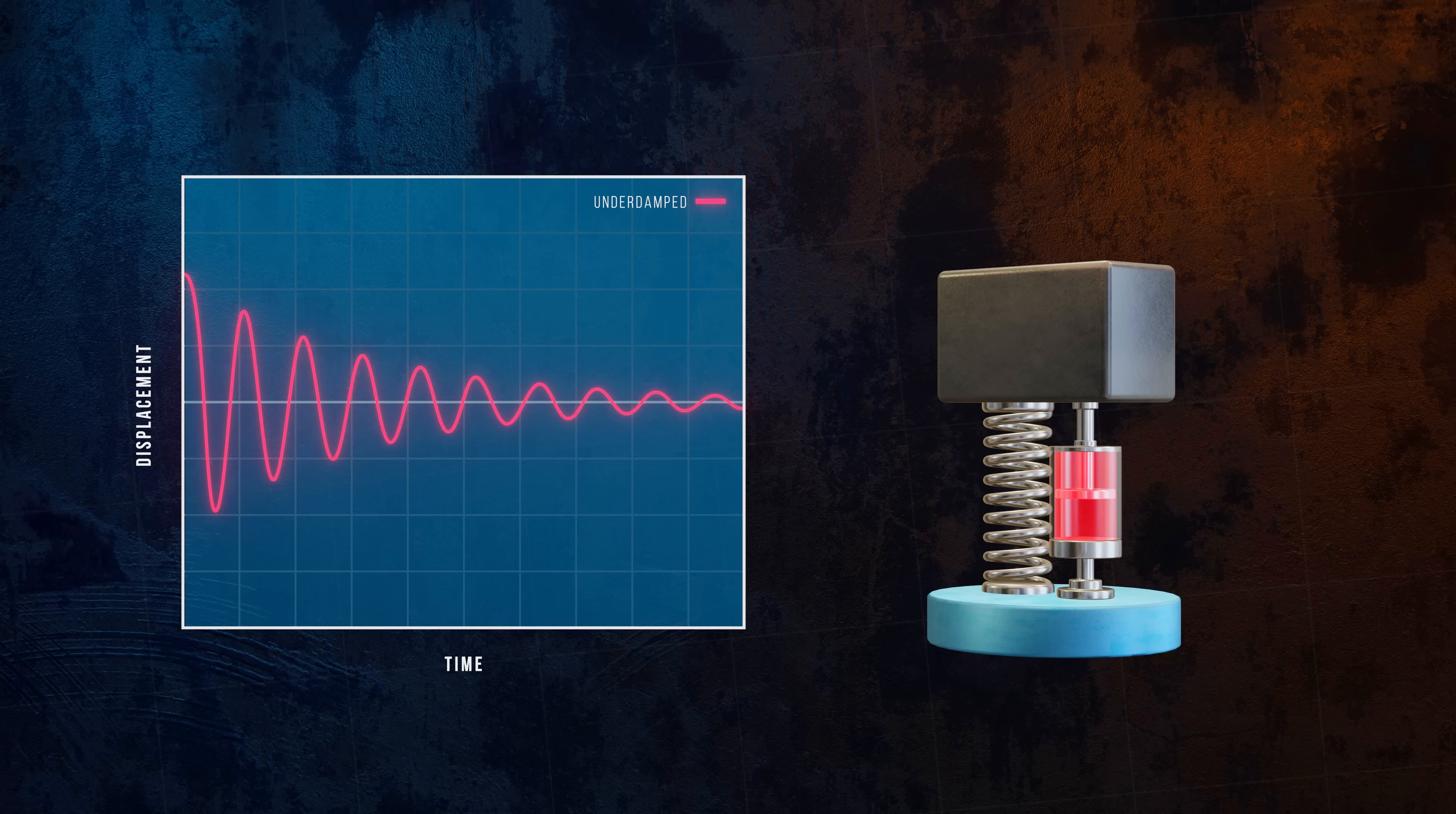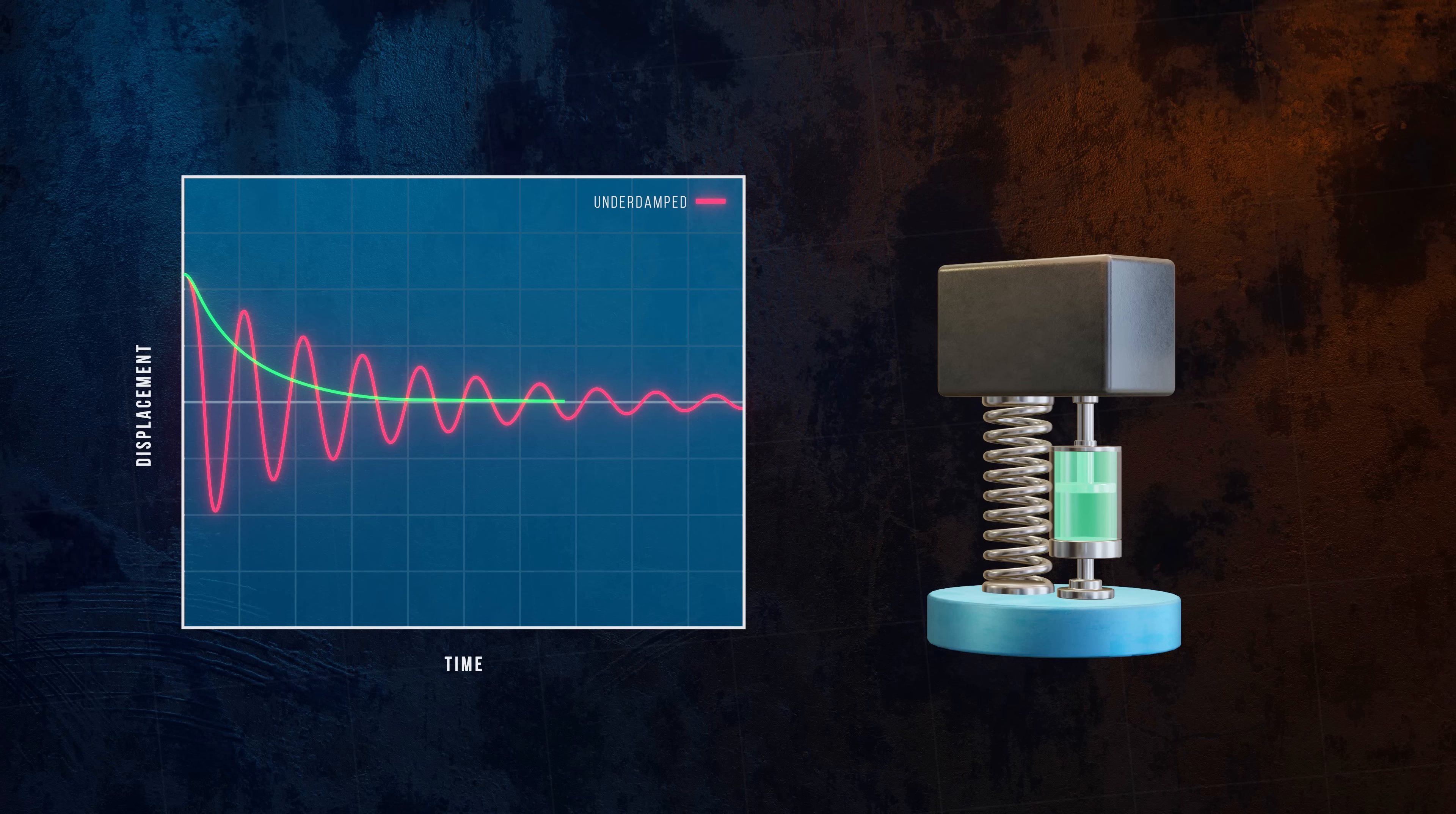If the damping of the system is increased significantly, which you can think of as the dashpot being filled with a far more viscous fluid, any oscillation will be completely suppressed by the damping. This is called an overdamped system.